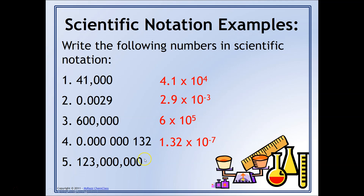And finally, for this number, it's a number much larger than one. The imaginary decimal point is at the end, and we're going to move it eight places to the left — that's a pretty big number. So this will be 1.23 times ten to the eighth.